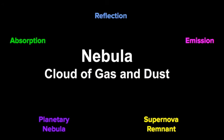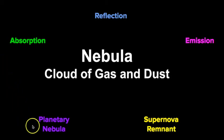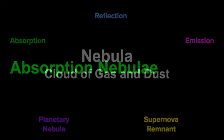The five types can be broken down into two categories. The ones at the top — absorption, reflection, and emission — are known as diffuse nebulae, meaning they do not have a definitive shape and are often named after objects they resemble. The other types — planetary nebulae and supernova remnants — are typically spherical in structure.